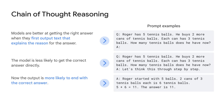Chain of thought reasoning is the observation that models are better at getting the right answer when they first output text that explains the reason for the answer. For example: Roger has five tennis balls. He buys two more cans of tennis balls. Each can has three tennis balls. How many tennis balls does he have now? When this question is posed initially with no reasoning, the model is less likely to get the correct answer directly. However, by the time the second question is asked with chain-of-thought reasoning, the output is more likely to end with the correct answer.